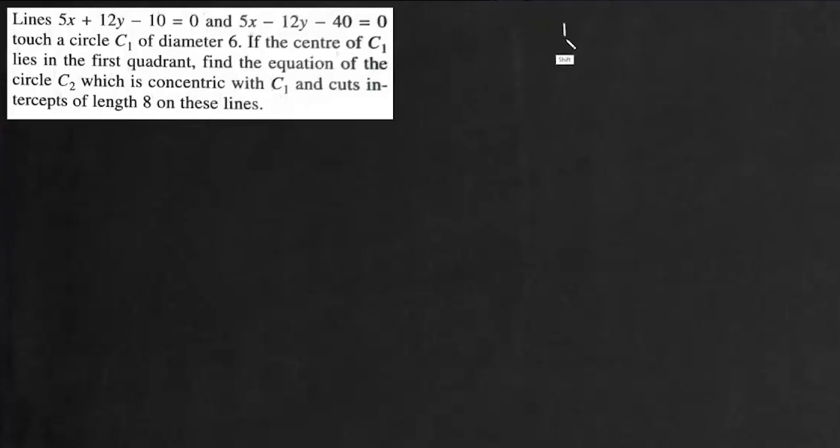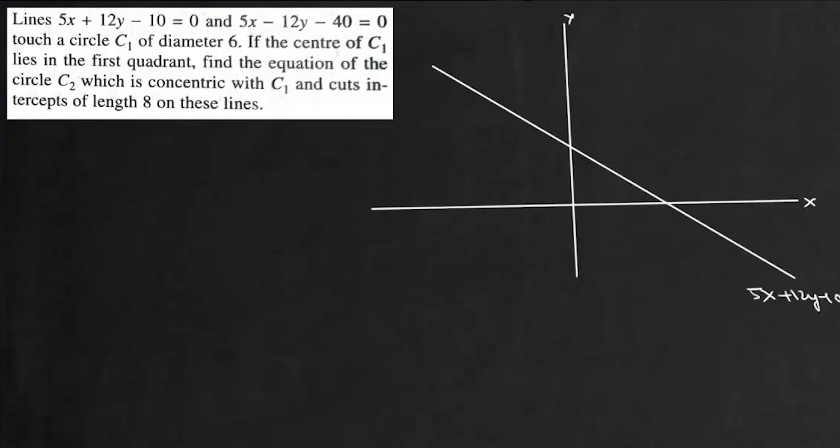First we'll draw these two lines roughly on a coordinate plane. So this first line is 5x plus 12y minus 10 equals 0. Here x-axis intercept is 2 and y-axis intercept is a little less than 1. So this is 5x plus 12y minus 10 equals 0.